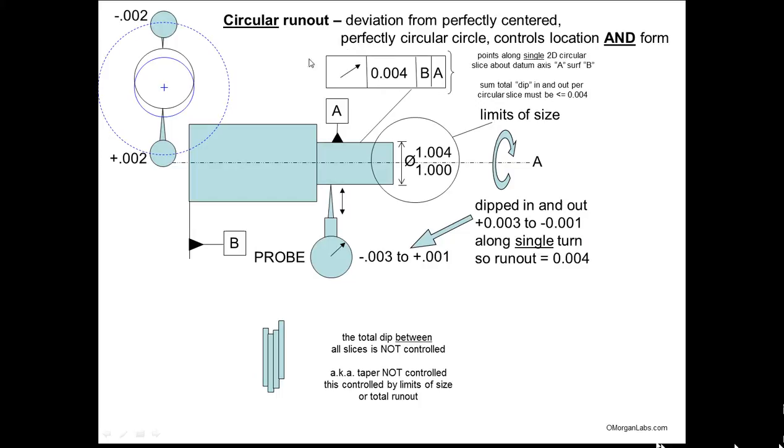So in this case, we would be within the runout requirement. So this is just one arrow. So this means that you're taking measurements at different little slices. You'll turn it 360, take a measurement, and then you'll move this dial indicator over. And then you'll take another reading, another and another, and you'll kind of build up little slices like a loaf of bread.